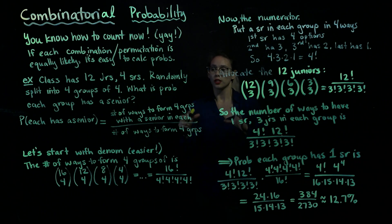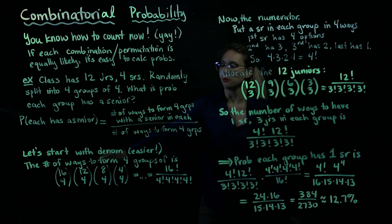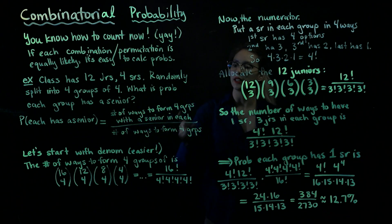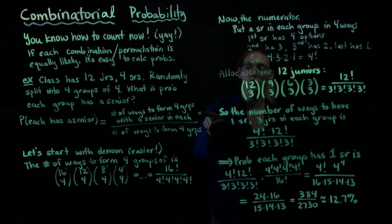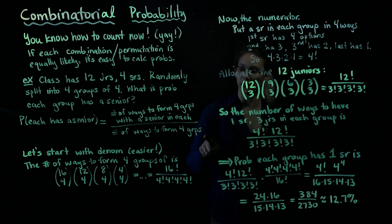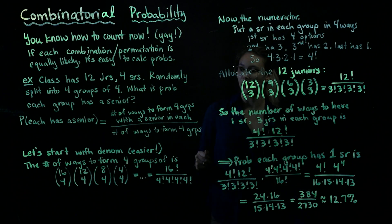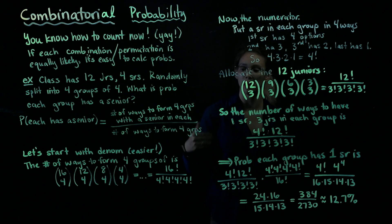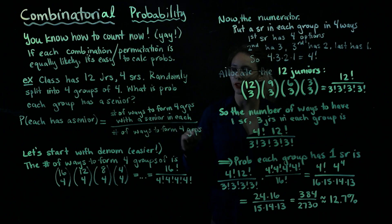In order to calculate this probability — the probability that each group has a senior — we need to count up how many ways we can form four groups with a senior in each group. We also need to calculate the number of ways to form four groups just in general. We can do the denominator first, starting with the easier part.